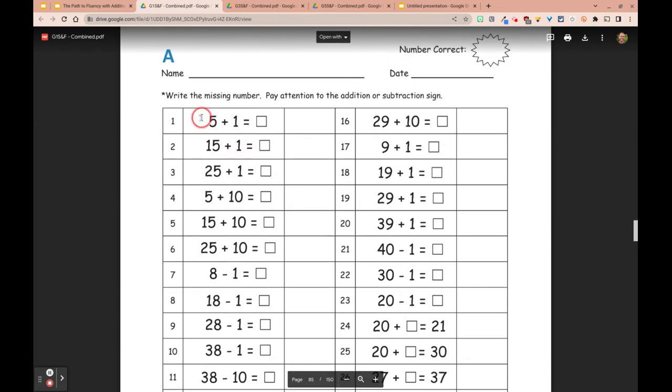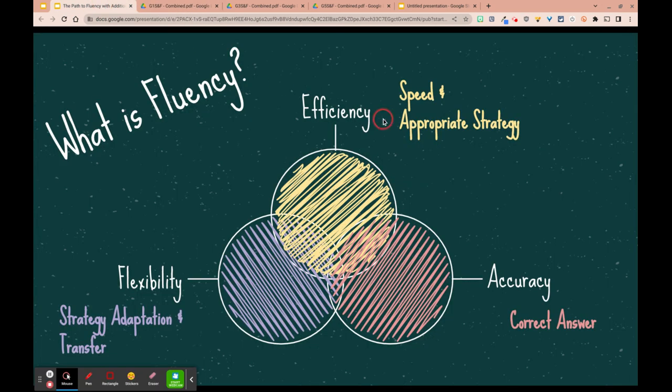The problem or my concern with running sprints in this fashion is that you really start to emphasize and maybe over-promote speed and accuracy as the two main components of fluency. We could get in a pickle where we disregard the strategy piece and then also the transfer of the strategy, because we really want to see those components to get this multi-pronged approach to fluency.